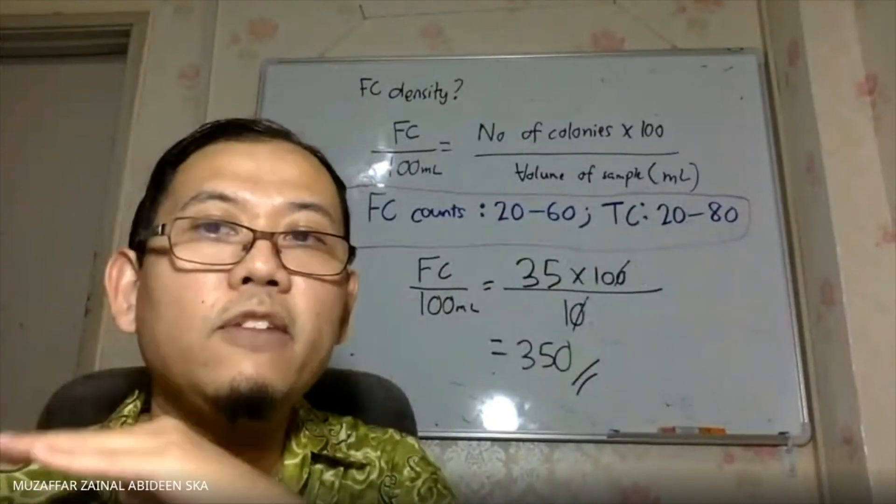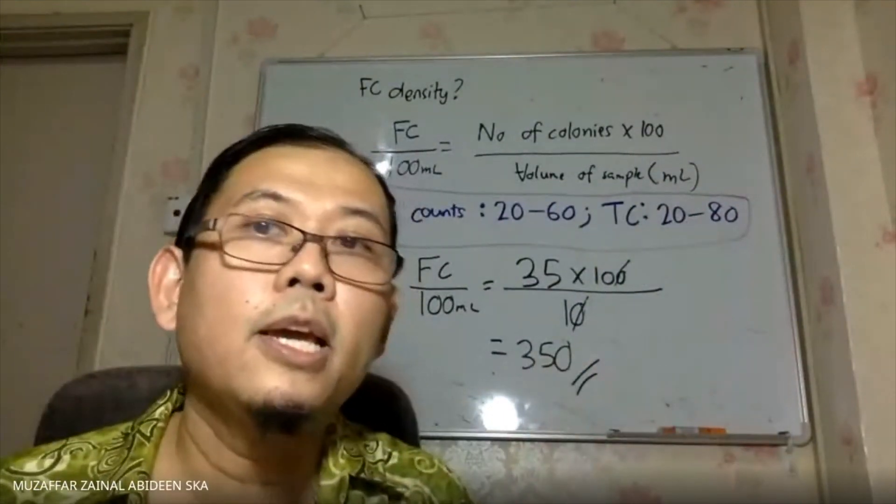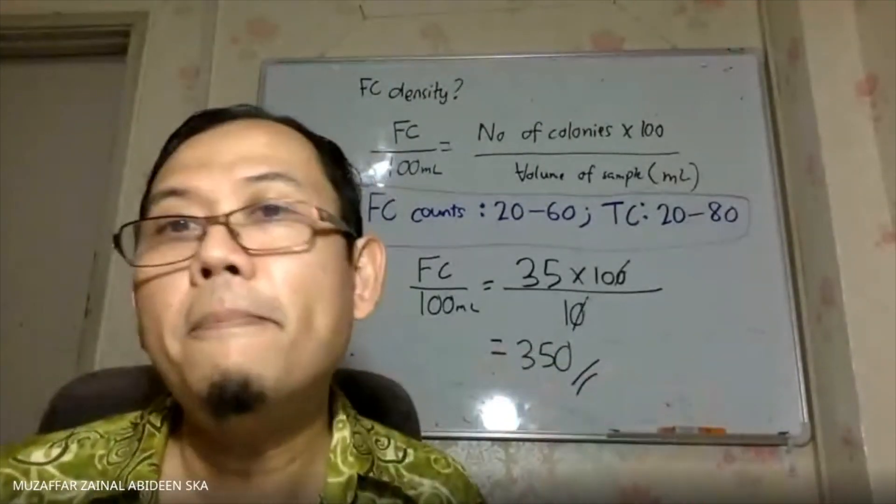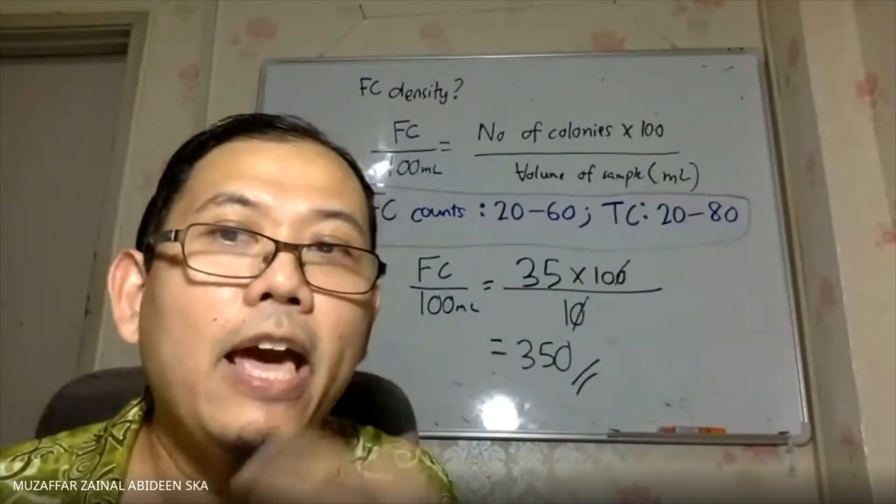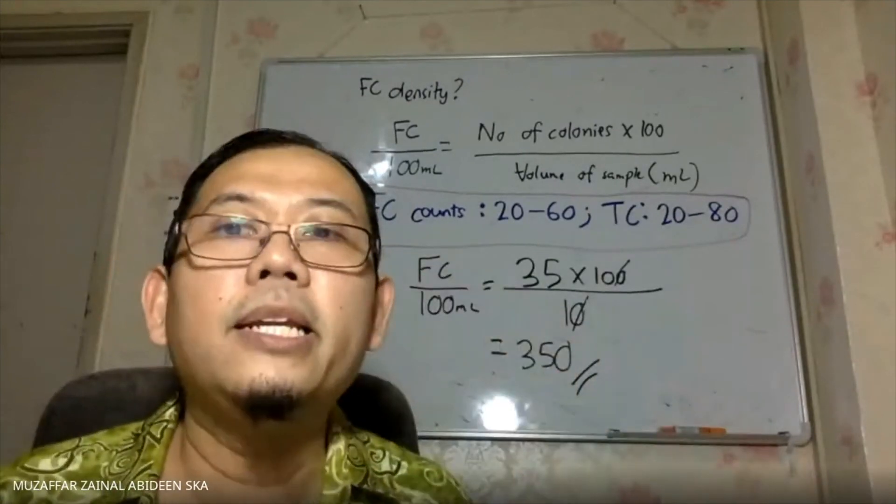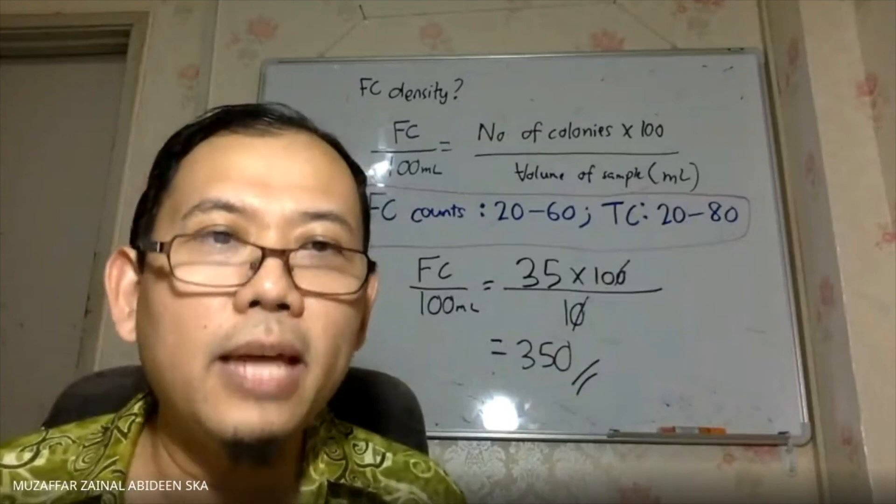And then you do it another one, 35 times 100 divided by 10, so you've got another result. So once you have two results, what you need to do is just to average them. And the average answer is basically representing the number of colony for that river.